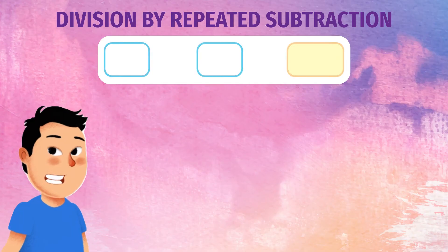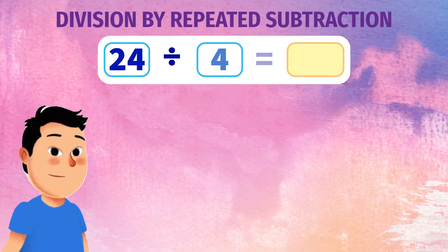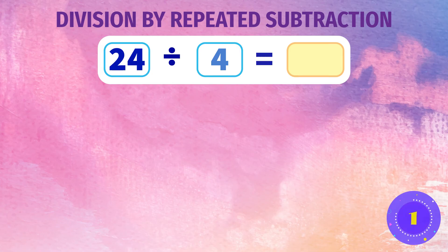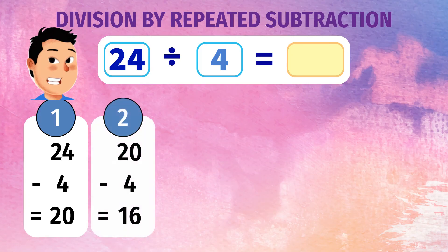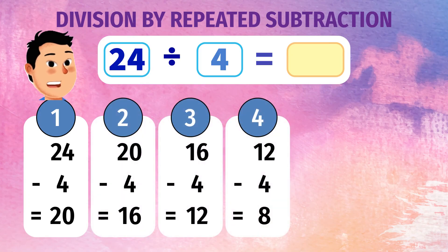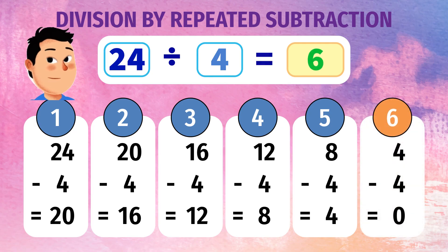Divide 24 by 4 by repeated subtraction. You have to subtract 4, 6 times from 24 to reach zero. The answer is 6.